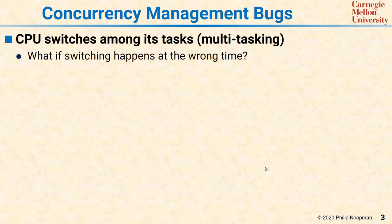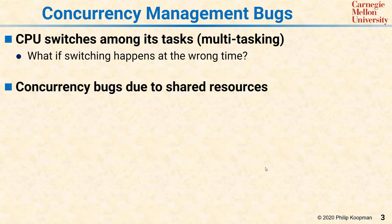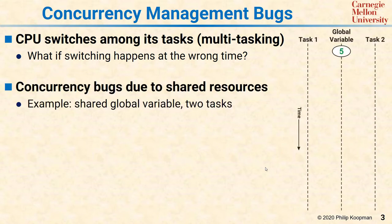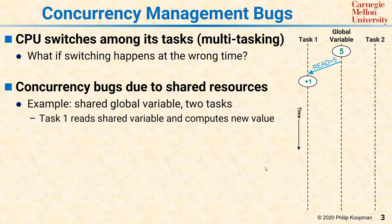Here we have a timeline, time going from top to bottom. We have two tasks, task 1 and task 2, and there's a shared global variable that currently has the value 5. Let's assume that task 1 reads that value and decides to add 1, so now task 1 thinks the value is 6, but the global variable is still 5 because it hasn't written it back yet.